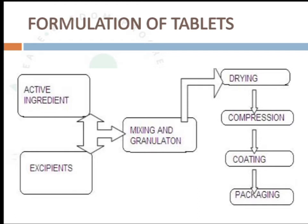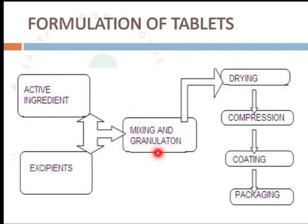This flowchart shows the general steps of tablet formulation. We take the active ingredients and the excipients and additives required, mix them, make granules by granulation, dry them, compress, apply coating if necessary, and finally packaging.